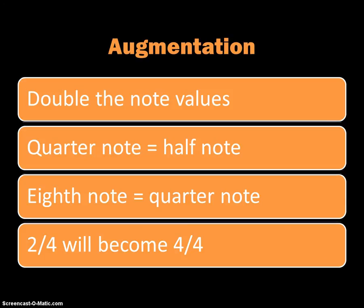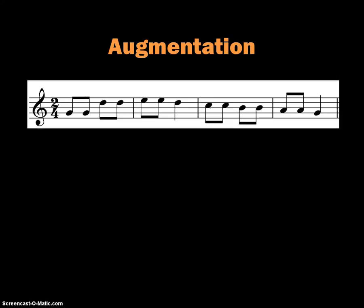Also, if you wanted to change the meter, you could go from 2-4 to 4-4, and that would preserve the same number of measures. So here's a little example of twinkle, twinkle, little star. We're starting in 2-4 time with eighth notes and quarter notes.